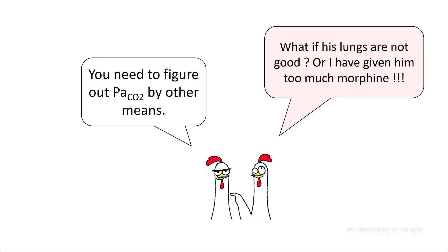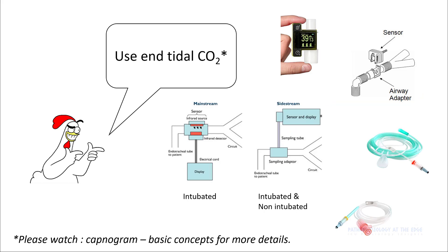The most important assumption here is that the lungs are working well. If you don't have good compensation from the lungs, you have to figure out PaCO2 by other means. The other way to figure this out is using end-tidal CO2. We have talked about end-tidal CO2 in a lot of detail in a previous lecture on capnography — please go ahead and review that.